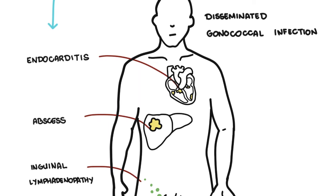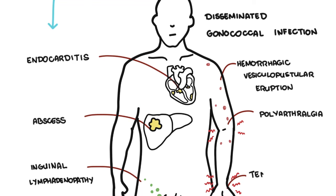Disseminated gonococcal infection is characterized by the classic triad: hemorrhagic vesicopustular eruption, polyarthralgia, and tenosynovitis.